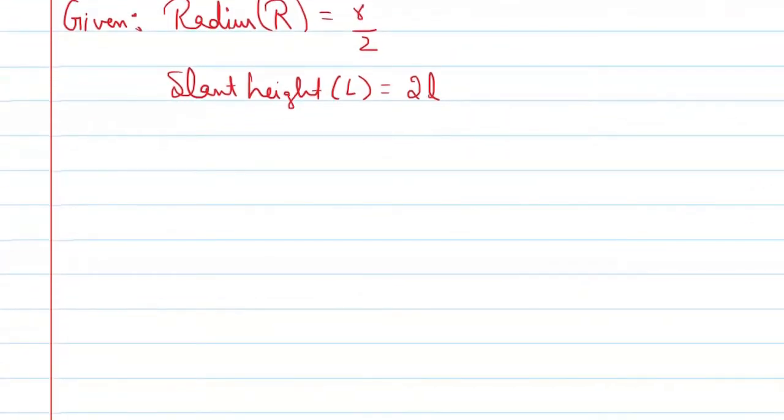Look at the total surface area of cone. It is pi R times L plus pi R squared. This total surface area will be pi capital R, capital L, plus pi capital R squared.